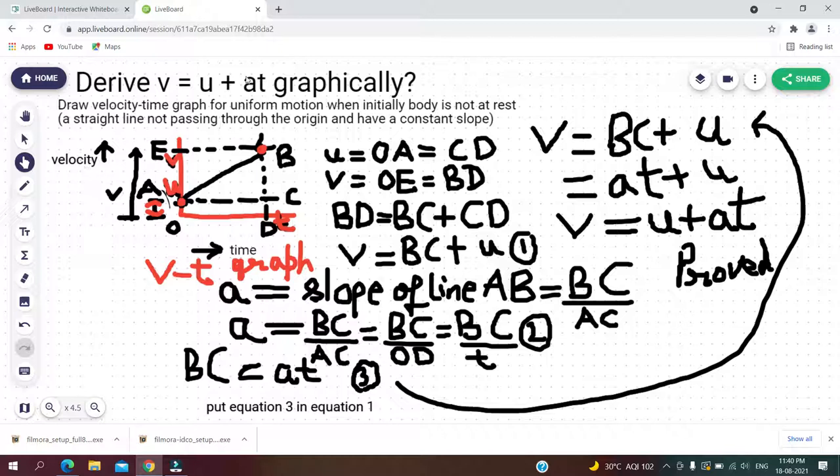Now from this equation when t is 0, velocity is equal to u. So first of all we will draw a scale whose magnitude is equal to u on the vertical y-axis, or you can say velocity axis.